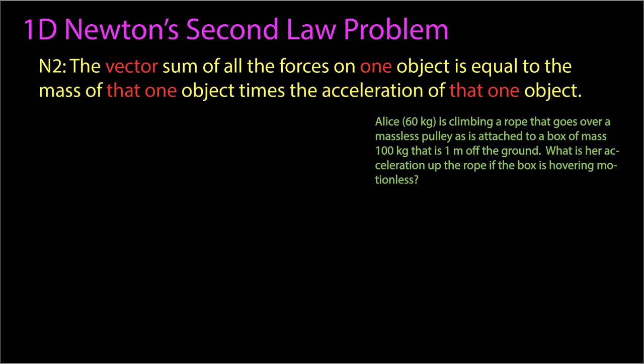The problem we'll look at is Alice, 60 kilograms, is climbing a rope that goes over a massless pulley that is attached to a box of mass 100 kilograms that is one meter off the ground. What is her acceleration up the rope if the box is hovering motionless?